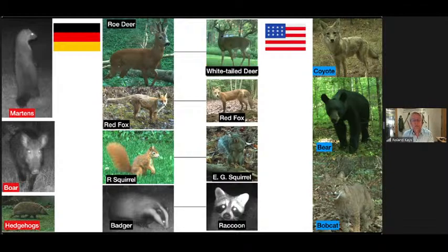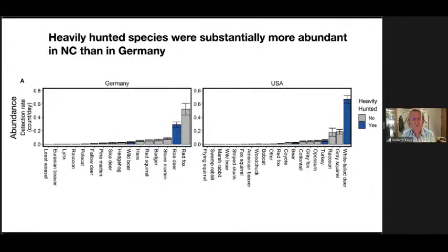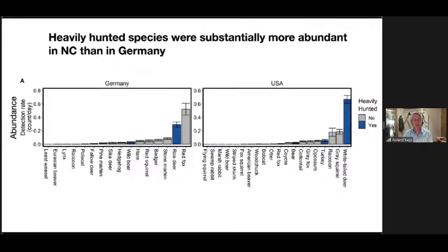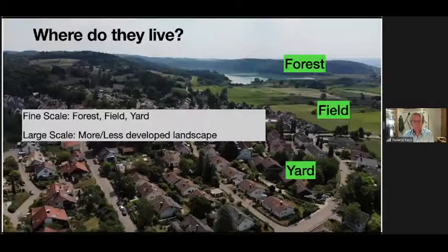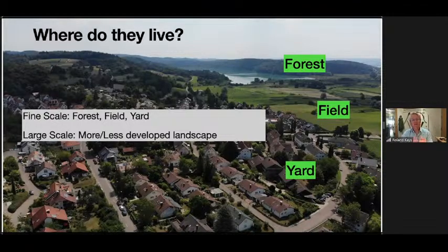The first result: heavily hunted species were substantially more abundant in North Carolina than in Germany. These graphs show relative abundance — pictures per day per camera — for Germany on the left and the United States on the right. White-tailed deer in the US is super abundant and is one of our heavily hunted species. On the German side, roe deer is much less common, and wild boar are also much less common. This very rough cut supports our hypothesis.